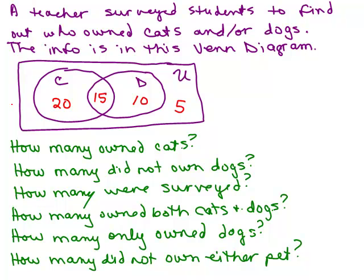She realized that some people have both animals. The circle labeled C represents the set of people who have cats, and instead of writing their names, she's just putting how many students each number represents. Then we've got the dogs in another circle, and then we have the entire universe in this big rectangle. These numbers represent how many people are in each region.